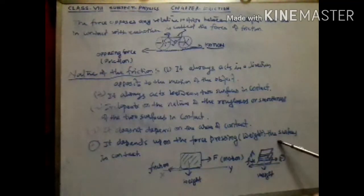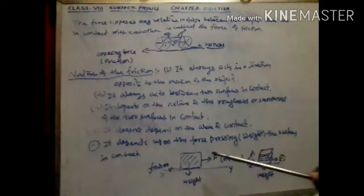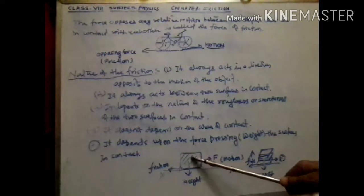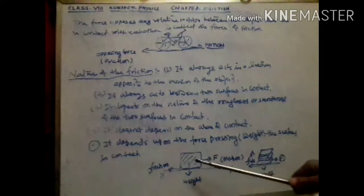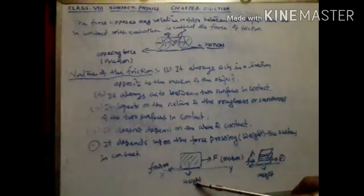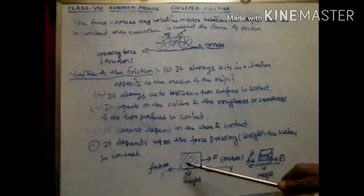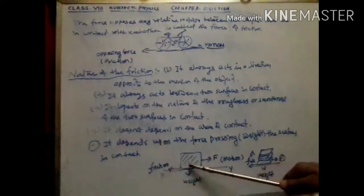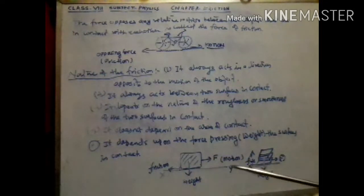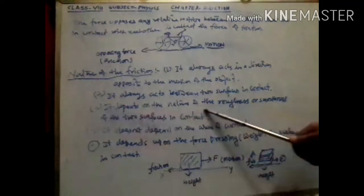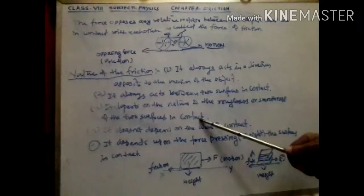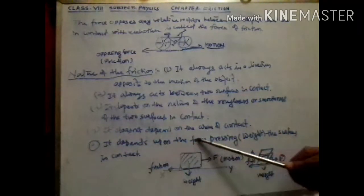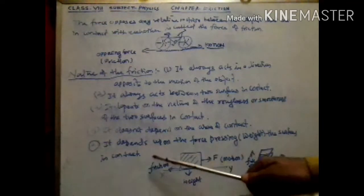Point five: friction depends on the force pressing the two surfaces in contact — that is, the weight. Take the example of a block kept on a surface. The block has some weight acting downwards. Due to this weight, a force of friction is active between the two surfaces. This means the force of friction depends on the roughness and smoothness of the surface in contact, and also on the force pressing the two surfaces together.